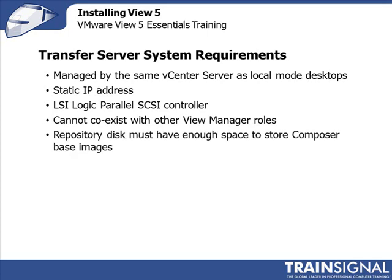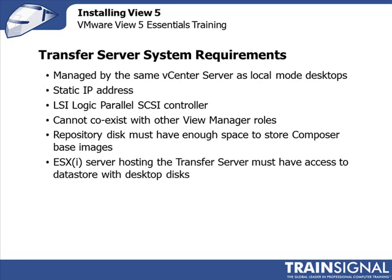The repository disk, where all checked-out virtual machines reside, needs enough space to store composer-based images. For link clone pools, look at the size of the initial composer-based disk and provide enough repository space for however many link clone VMs users will check out. The ESXi server hosting the transfer server must also have access to the datastores containing the desktop disks being checked out, since it mounts those disks to the transfer server.